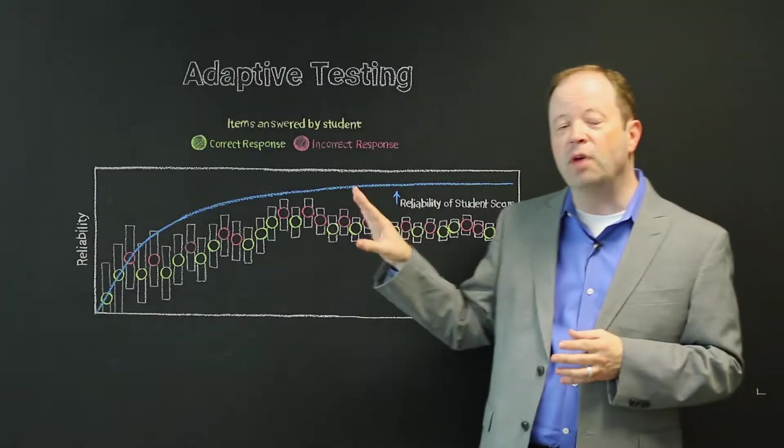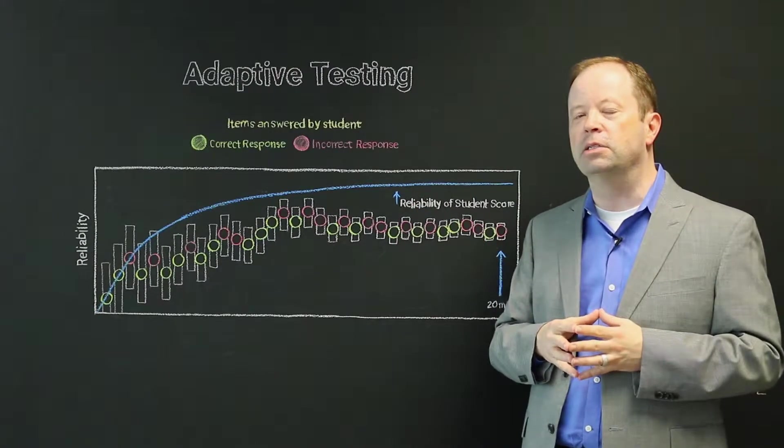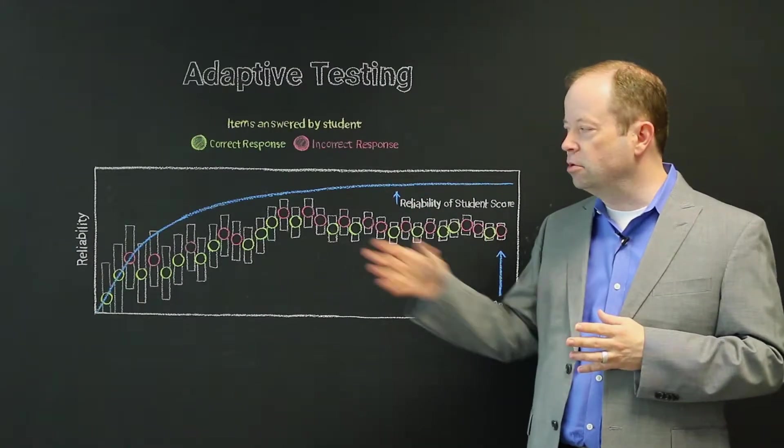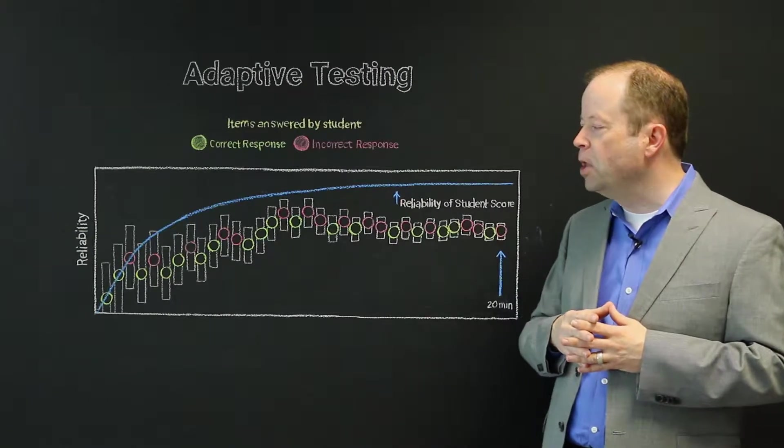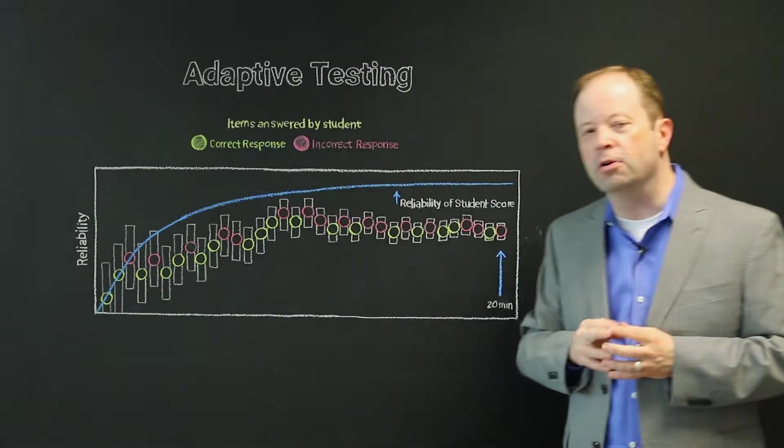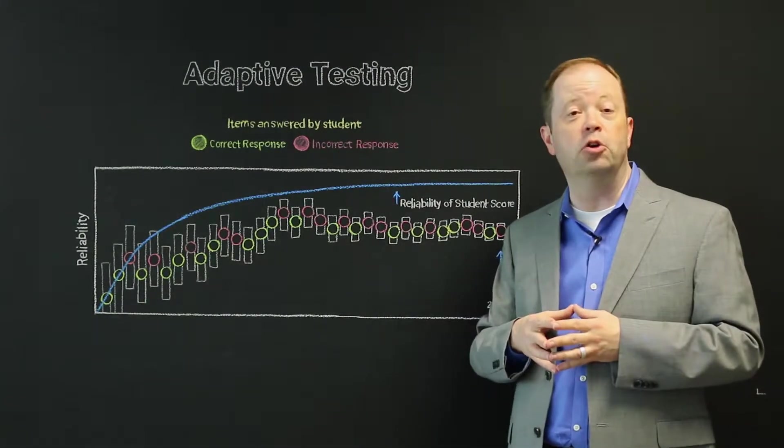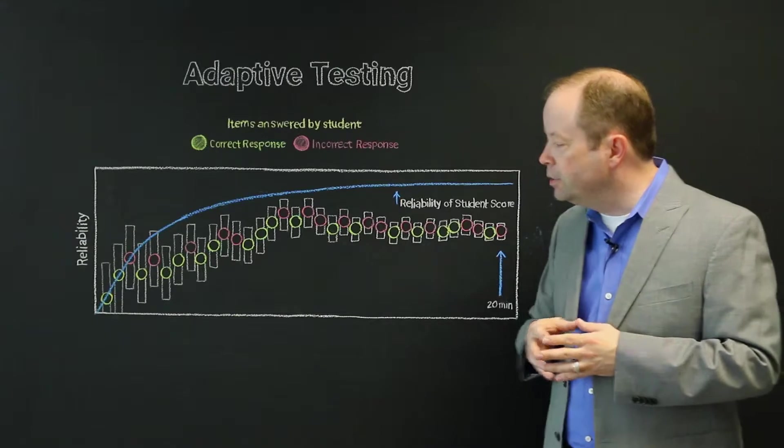This graphic, I think, is one of the most valuable ones we have to help you understand several really important ideas about adaptive testing. So let's work through them. First of all, each green or red dot here represents a question either answered correctly or incorrectly by the student.